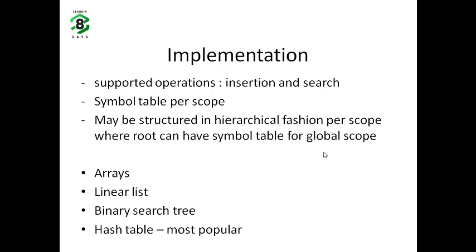Generally, a symbol table can be implemented by an array or a linear list or binary search tree or hash table. In arrays, insertion can be very fast keeping track of the current end of the array, but search can be of order n. Similar is the case for linear list but with some more memory consumption.